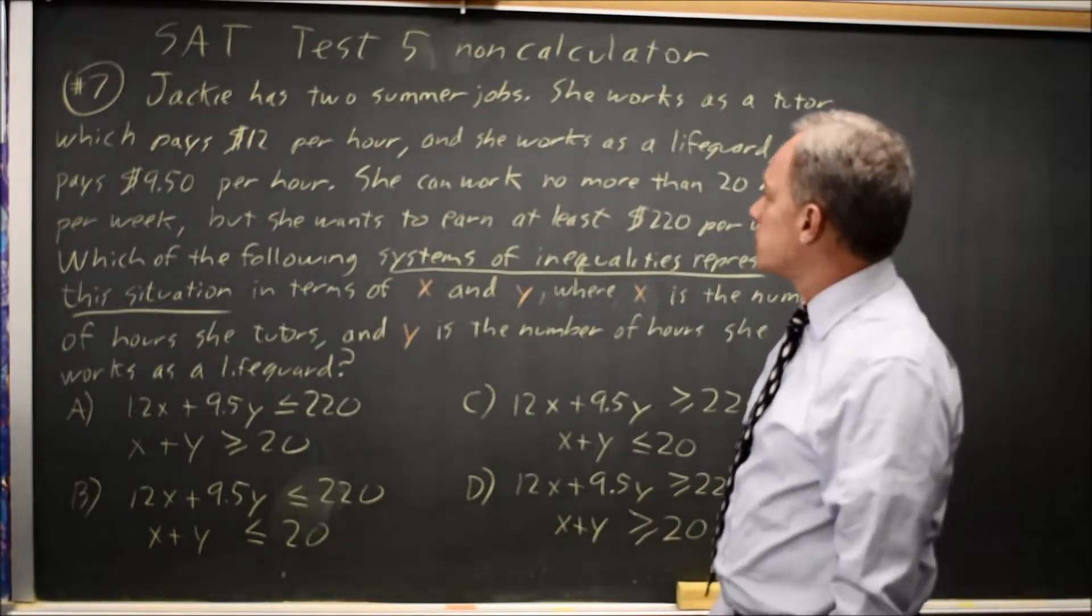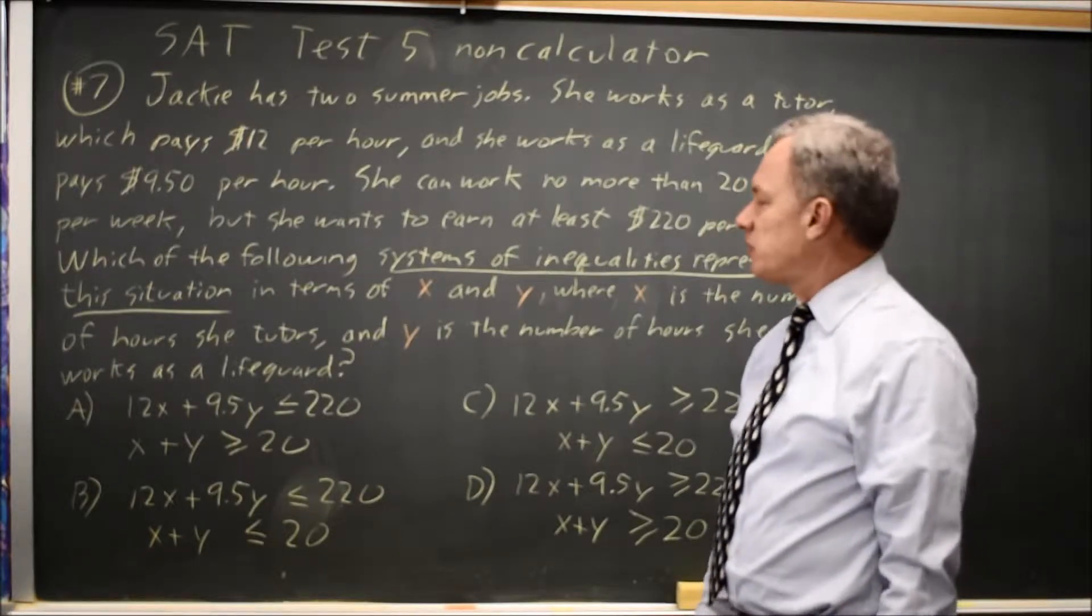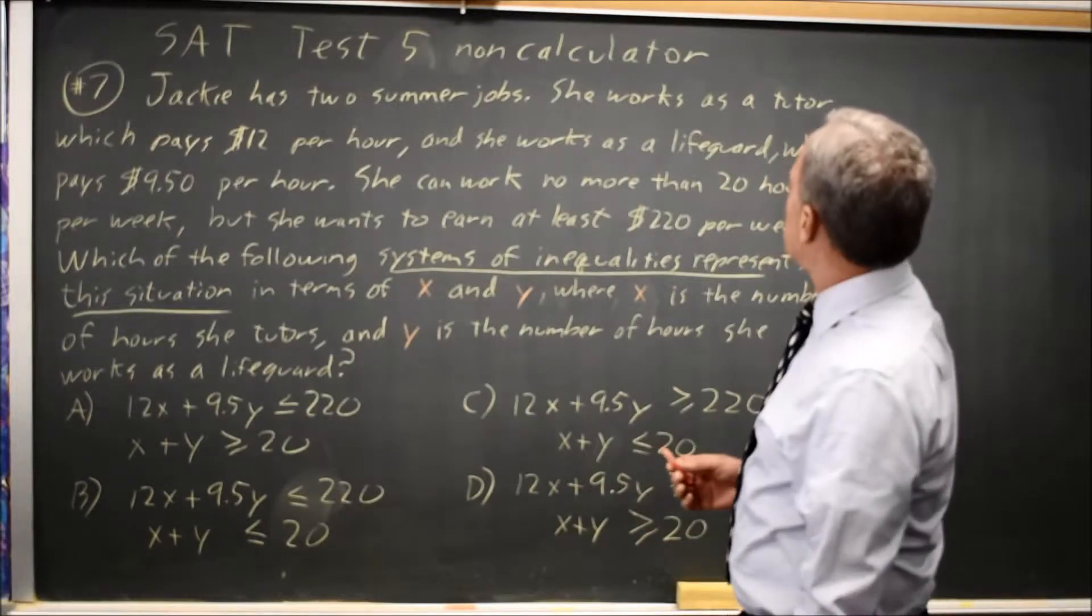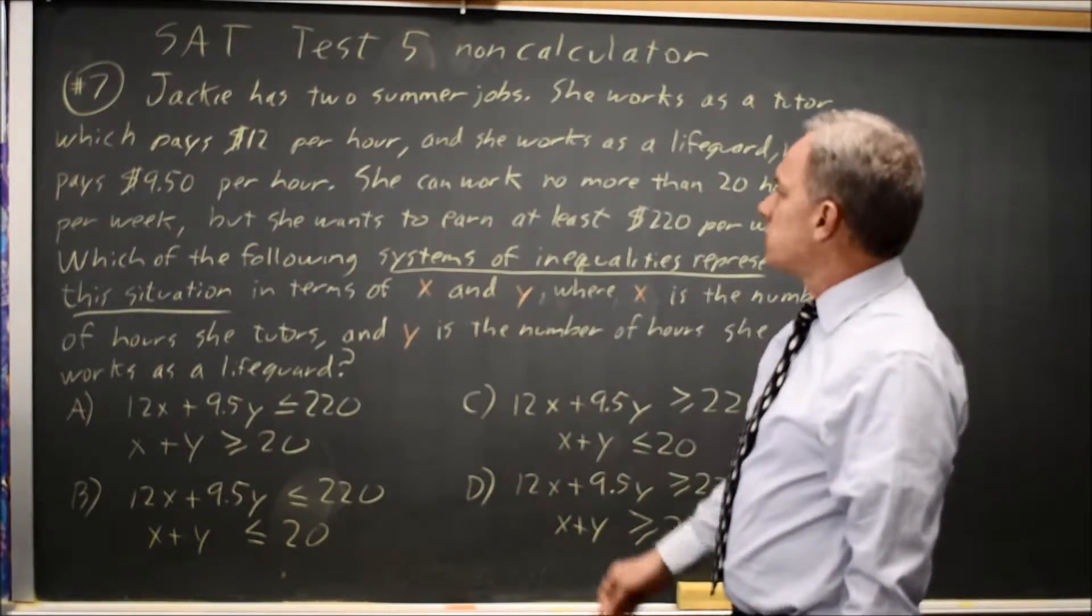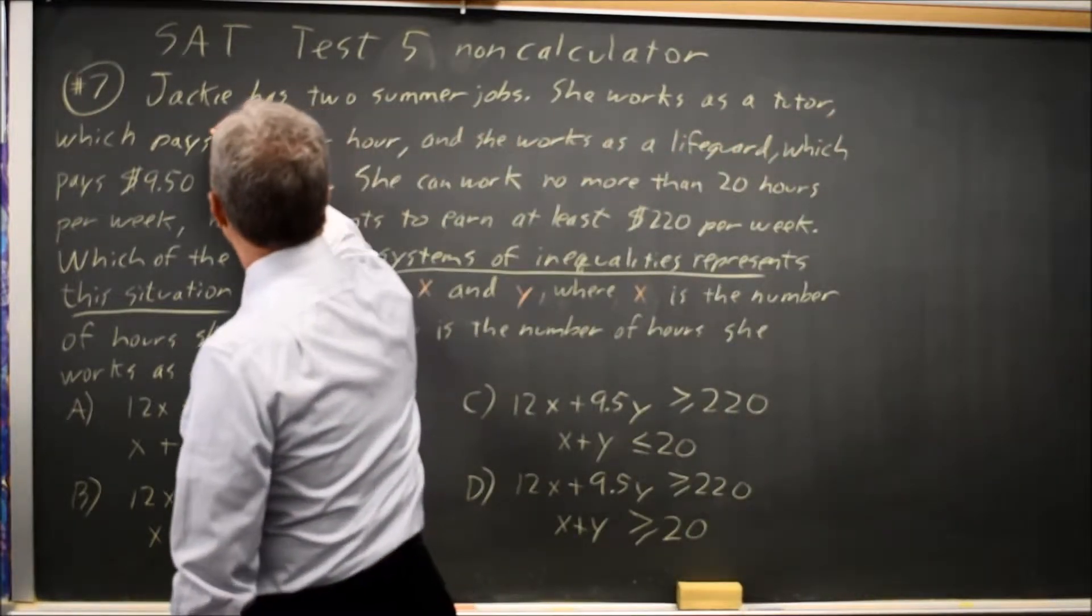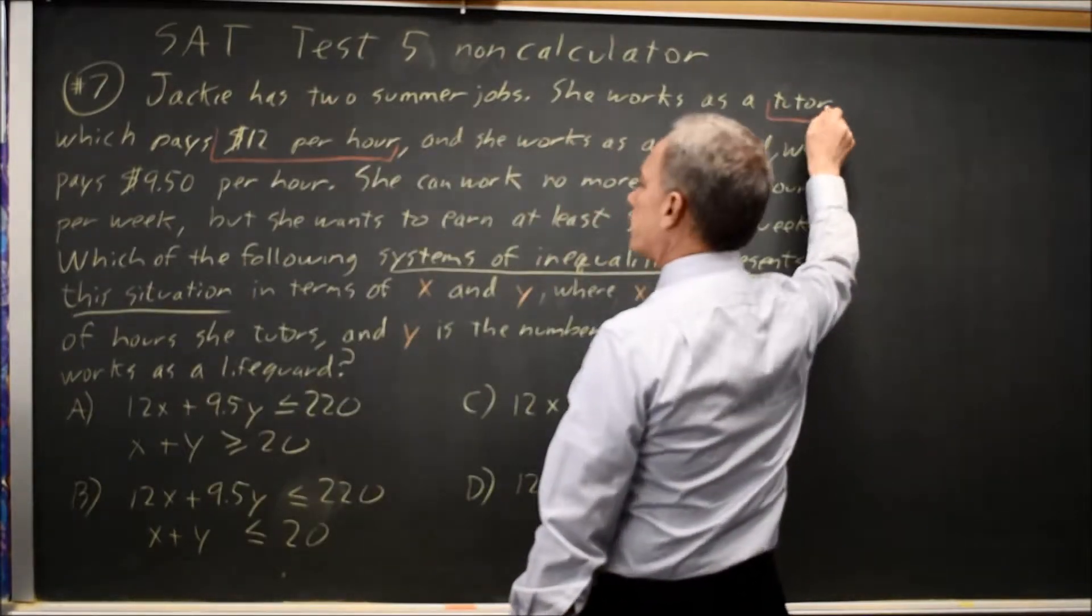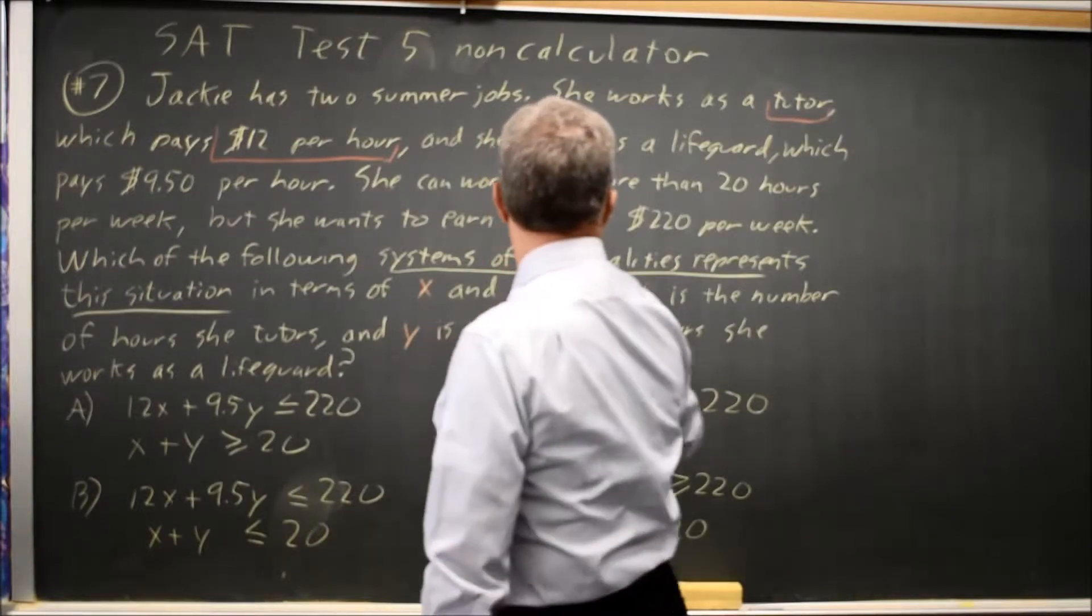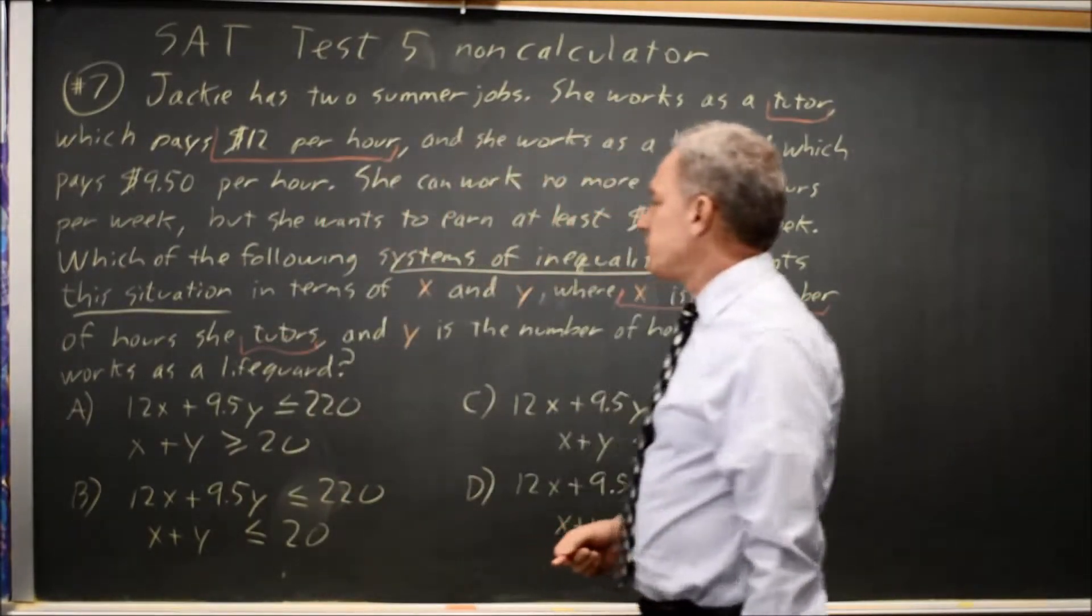So let's look at the words of the problem and see how 12x plus 9.5y is supposed to compare with 220. We work x is hours she tutors, and she makes $12 per hour tutoring. So 12x would be the amount of money she makes tutoring.